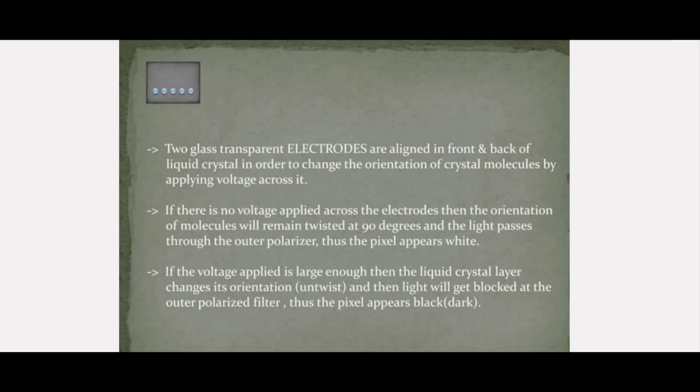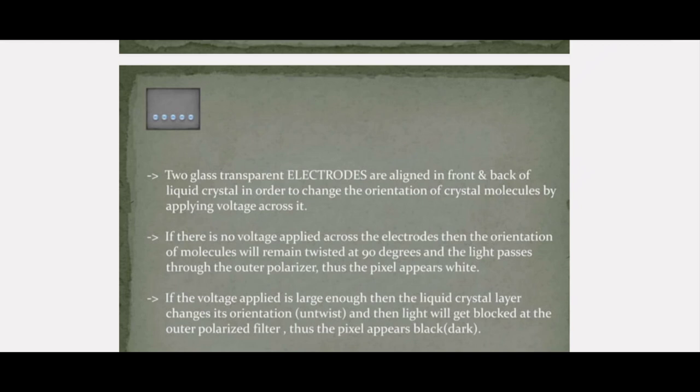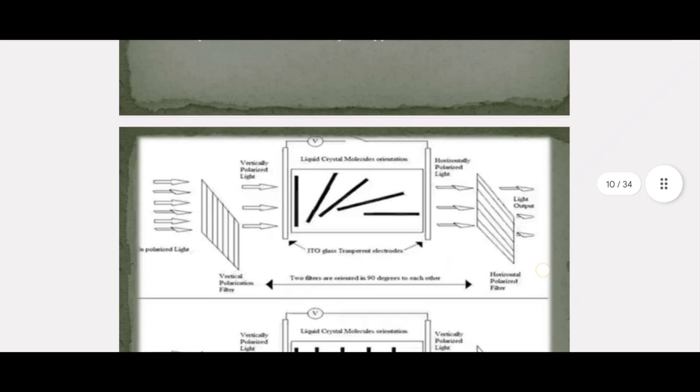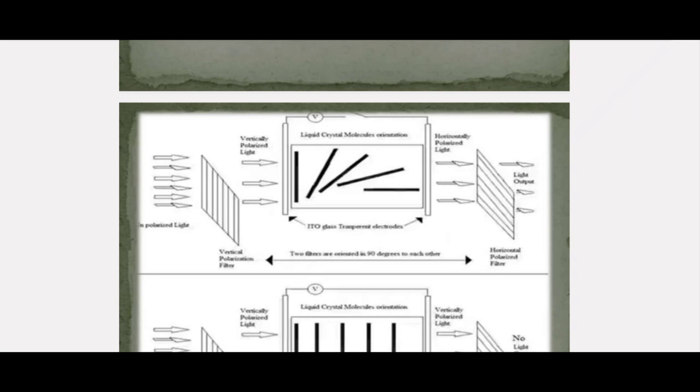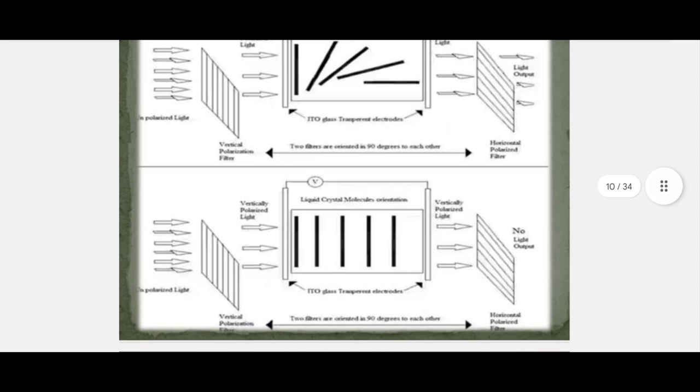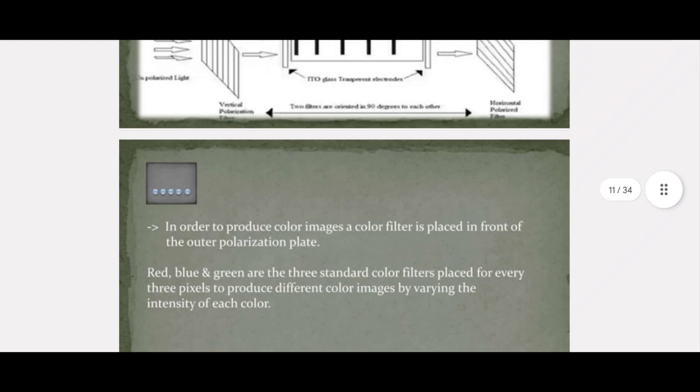When voltage is applied, the pixel appears black. When no voltage is applied, the pixel appears white. As shown in the main diagram, when no voltage is applied, the light output passes through the horizontal polarized filter. When voltage is applied to the two glass electrodes, no light will be produced — so it will be black. In order to produce color images, a color filter is placed in the outer polarization plate.